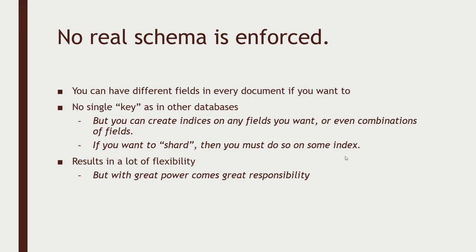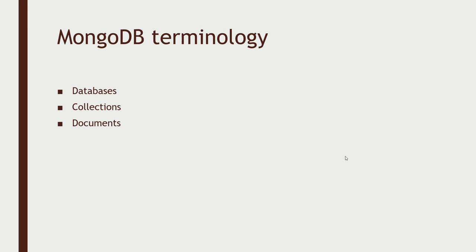Think about what indices you might need for fast lookups for the queries you're going to do. At the end of the day, it's still a NoSQL database, so you cannot do joins efficiently. You want to make sure your schema is denormalized as much as you can. In MongoDB, we talk about databases, collections, and documents instead of databases, tables, and rows. A MongoDB database contains collections, and a collection contains documents. Collections can contain pretty much anything, but you cannot move data between collections across different databases.